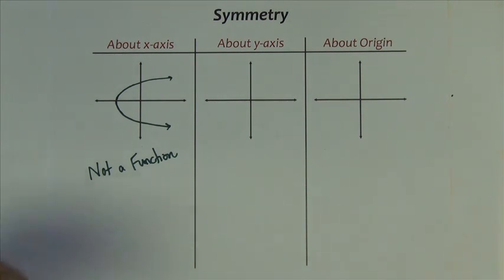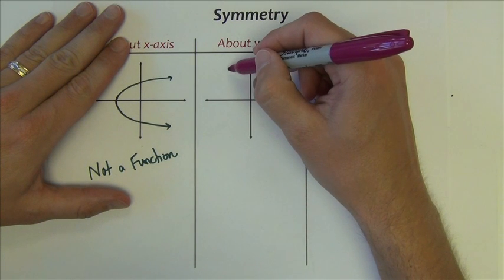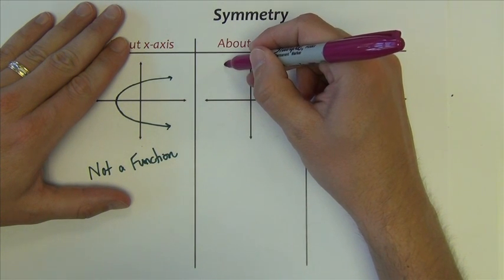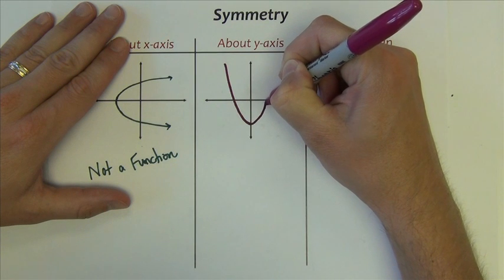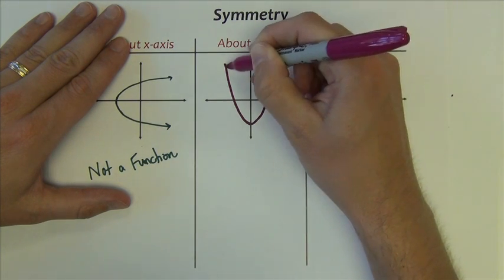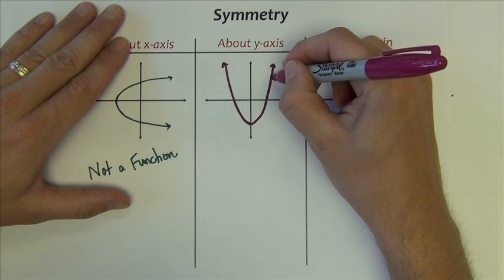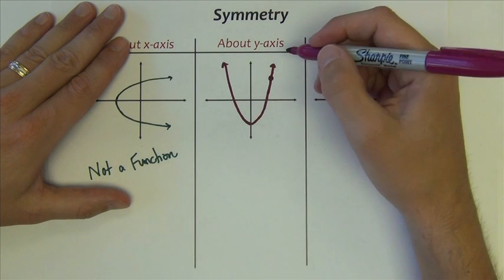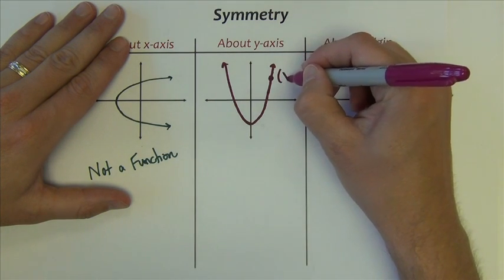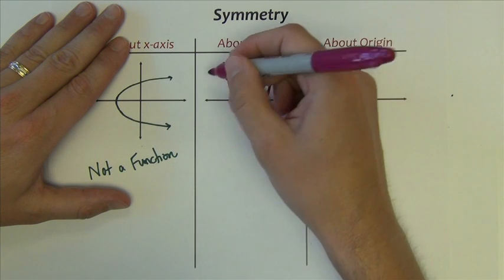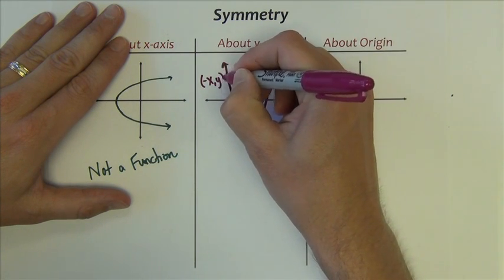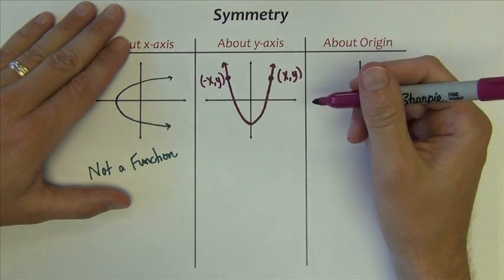We have graphs sometimes that are symmetric about the y-axis. So maybe it looks like this. Where if the point xy is on the graph,